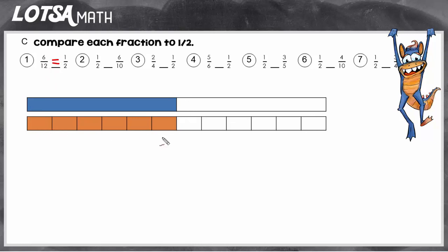So let's look at number two. For number two we have one half and we're comparing it to six tenths. So here I see that we have one half and down here I see that this is a model for six tenths. So I can tell by looking that six tenths is greater than one half.